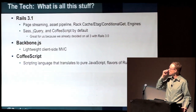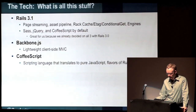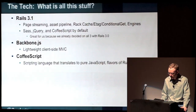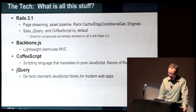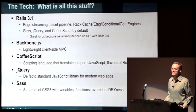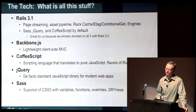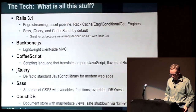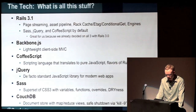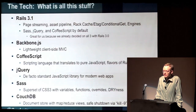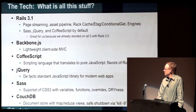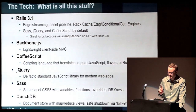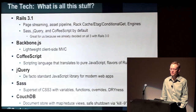CoffeeScript is essentially a new scripting language that translates into pure JavaScript. It's got a lot of flavors and features from Ruby and Python baked in. jQuery is the de facto standard. Sass, if you haven't used it, is a superset of CSS3 with awesome stuff like variables, functions, overrides, and inheritance — very DRY, exactly what we've always wanted. CouchDB is a document store with MapReduce views, definitely not anything like a relational database — and you get a safe shutdown via kill-9, which is great in the cloud.